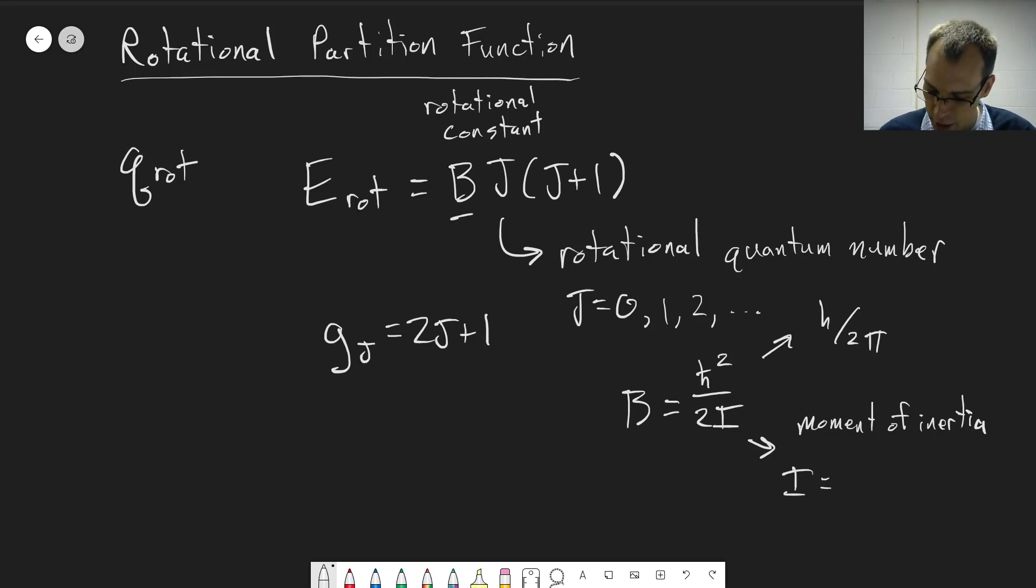For a diatomic molecule, this has a fairly straightforward formula, which is the reduced mass, which is the same reduced mass that we have from the vibrational energies, times the bond length squared. r is the bond length. That's defining lots of variables here. But the point is, we have an expression that describes the rotational energies.